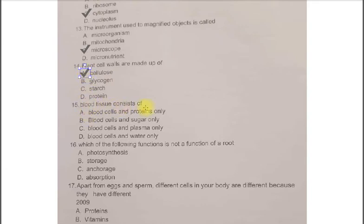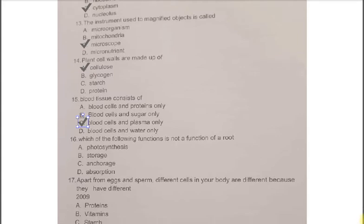Blood tissue consists of A. Blood cells and proteins only. B. Blood cells and sugar only. C. Blood cells and plasma only. D. Blood cells and water only. The correct answer is C. Blood cells and plasma only.